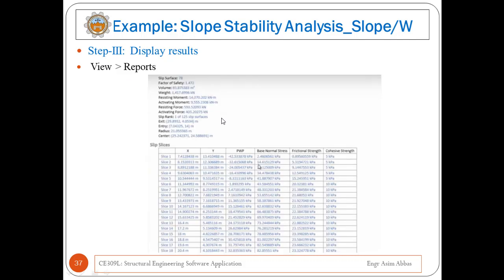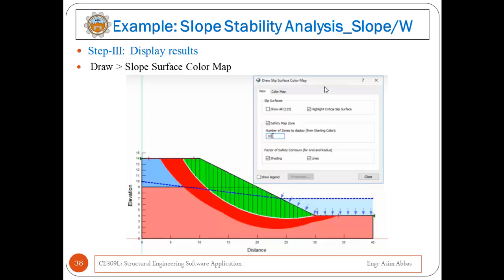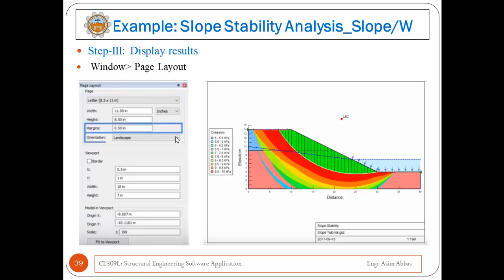You can generate a report by going to View and clicking on Report — a document-form report will be generated. You can also view the slope surface color map, which shows the complete failure surface with different factors of safety. To set your page layout, go to Window and choose Page Layout — a window will appear from which you can set page size, margins, and other page-related information.